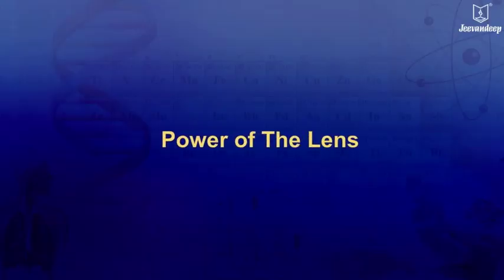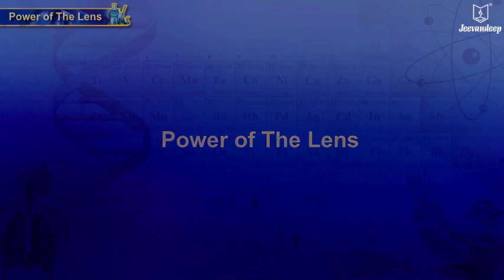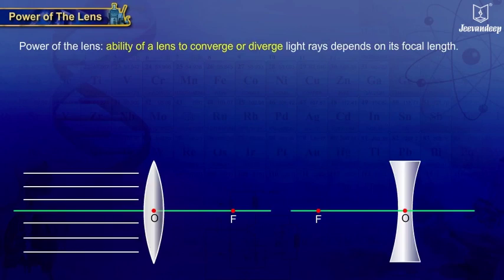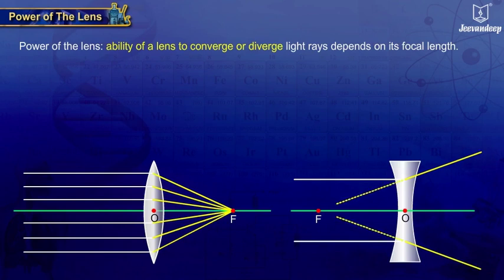Power of the Lens. The ability of a lens to converge or diverge light rays depends on its focal length.